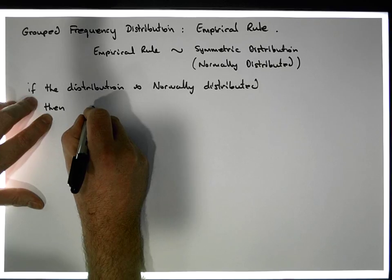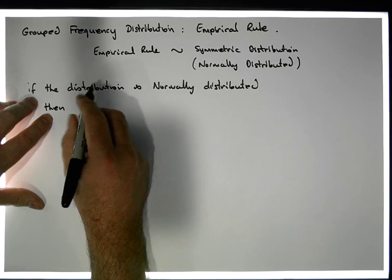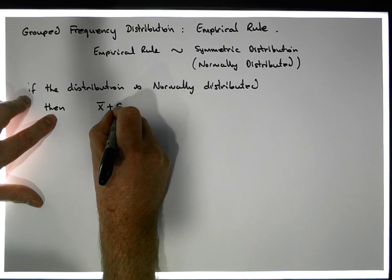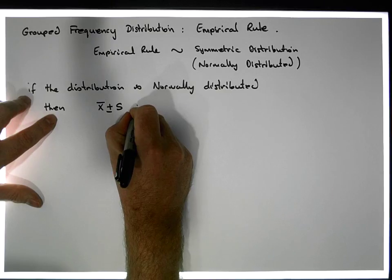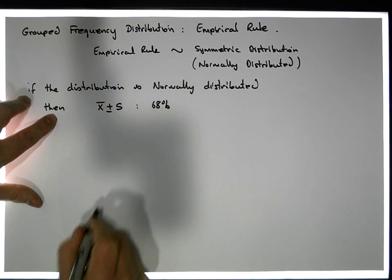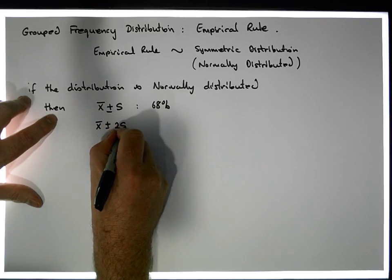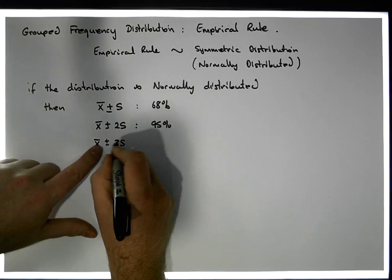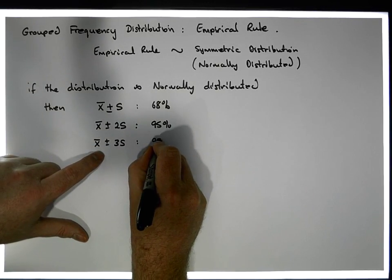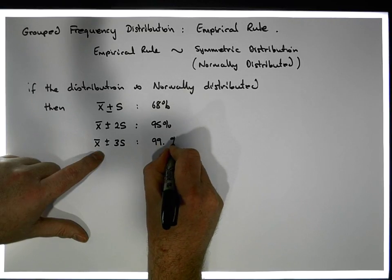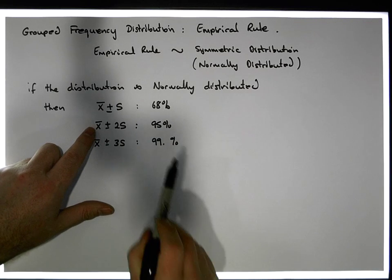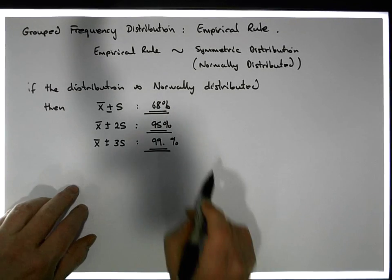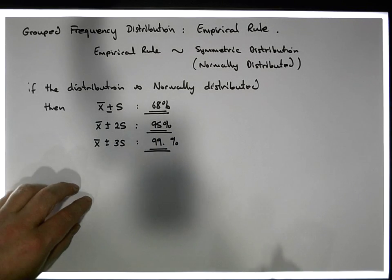So, if the distribution is normally distributed, then with x-bar plus or minus one standard deviation, we'd expect to observe approximately 68% of observations. With x-bar plus or minus two standard deviations, we'd expect to observe 95% of observations. And with x-bar plus or minus three standard deviations, we'd expect to find 99.7% of observations. This video is going to figure out how we came up with these values — 68%, 95%, and 99.7%.